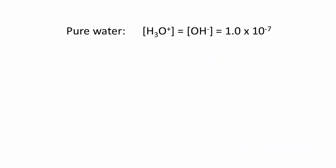In pure water, the hydronium and hydroxide concentrations are equal, and thus each is 1.0 times 10 to the negative 7 molar.